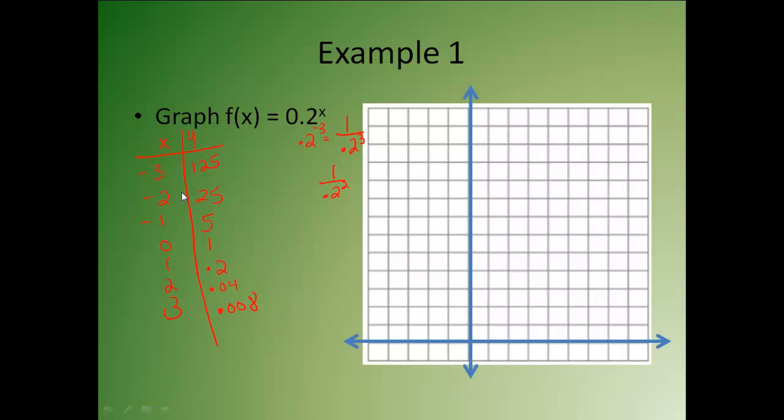So based off of my numbers, I'm not going to graph negative 3, 125. I'm going to start at the negative 2. So at negative 2, I'm clear up here to 25. You know what? I might not even graph that one based off these other numbers. I'm going to start with negative 1. So there's negative 1, positive 5. 0 takes me to 1. 1 takes me to 0.2. 2 is 0.04. And 3 is 0.0004.